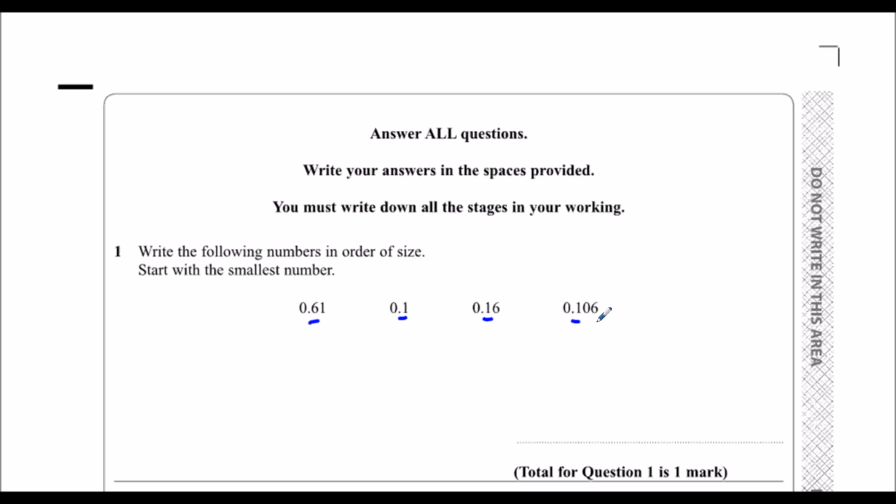Tenths—so the first number after the decimal point is tenths, and then we've got hundredths, which is the second number after the decimal point, and then we've got thousandths.